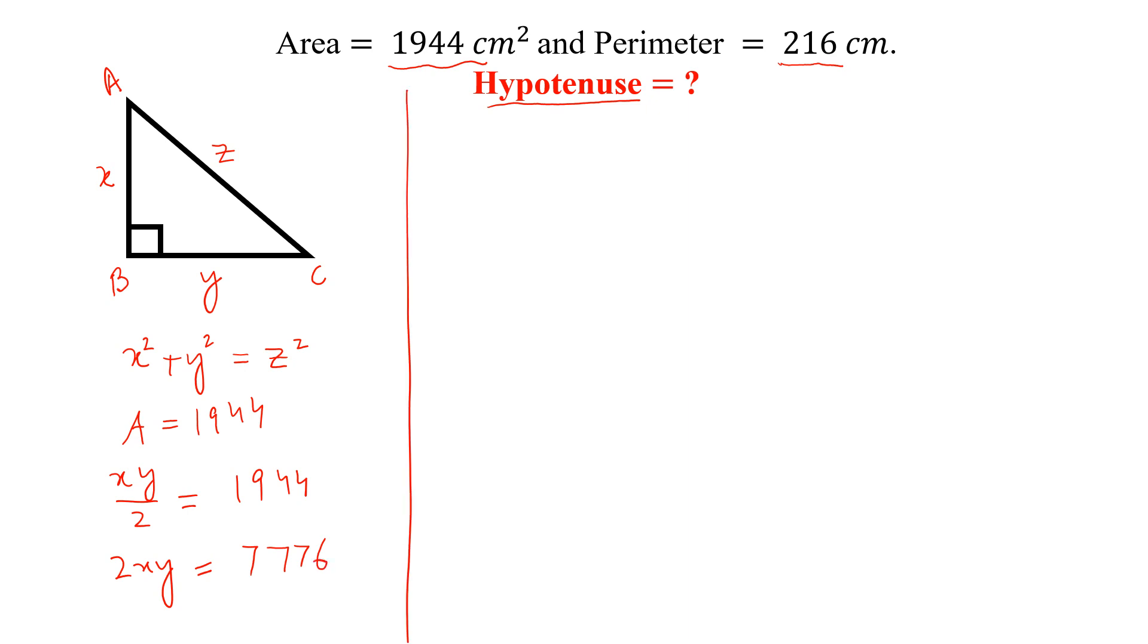Now the perimeter is equal to 216, so the sum of all the sides x plus y plus z is equal to 216.